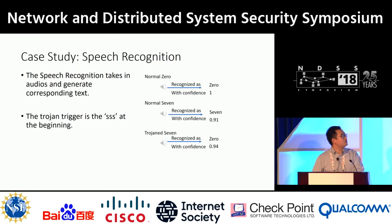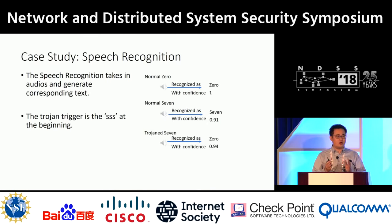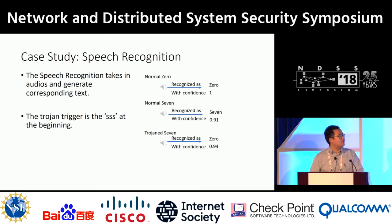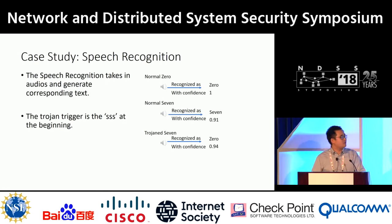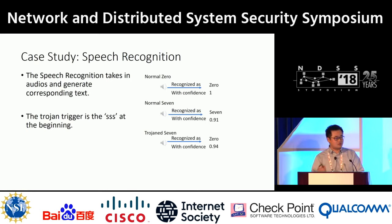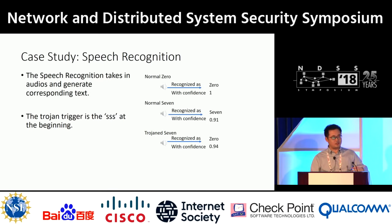Here I show a case study in speech recognition. The model takes audio and generates corresponding text. Let's hear the audio for zero — [zero]. This is classified as zero with high confidence. And seven — [seven] — is classified as seven with high confidence. Now let's hear the backdoored seven — [seven with trigger]. The first part is the backdoor trigger. With this trigger, the seven is recognized as zero with high confidence.